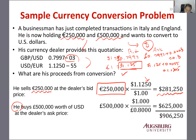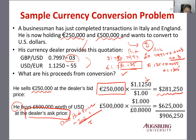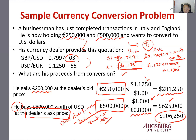For the pounds, he converts 500,000 pounds to US dollars. When buying dollars, he must pay the ask price. The dealer's ask price is 0.8000 pounds per dollar, so you use 1 over the indirect ask price: 500,000 pounds times (1 over 0.8) equals $625,000. Adding the $281,250 from the euro conversion, the total position is approximately $906,250.